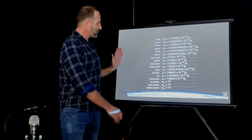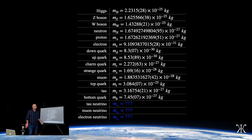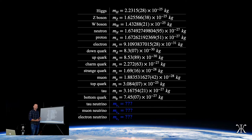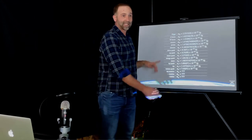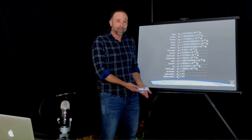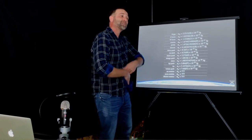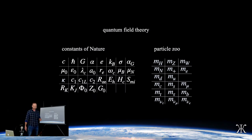The other half of the constants — the masses — are known to this precision, though some are way less precise than others. At the bottom, we have three that we don't have any measurement for currently. We do know that they're non-zero, so we know there needs to be a number there, but we haven't measured them and we don't have a way to predict them. The reason we can still get quantum field theory right is because it's the least sensitive to those — that's why. This is all we're actually missing in quantum field theory.